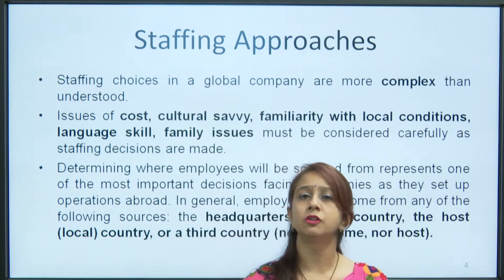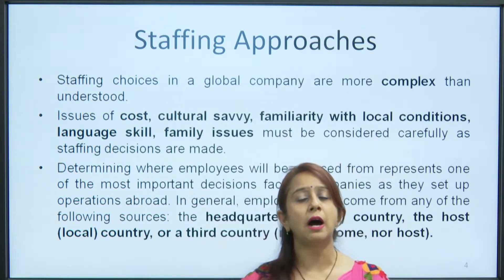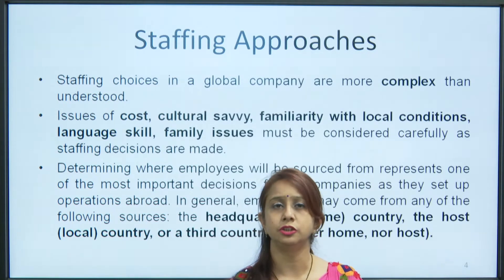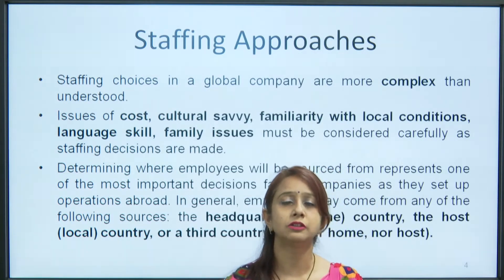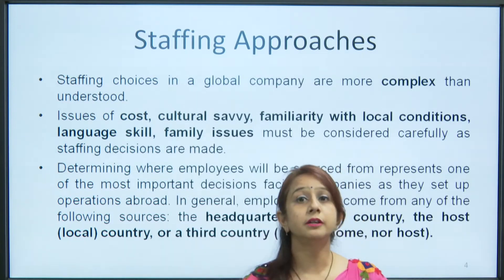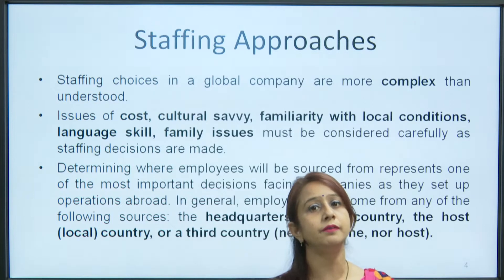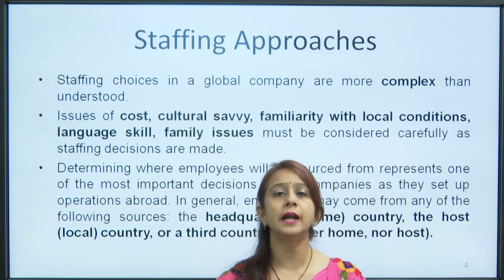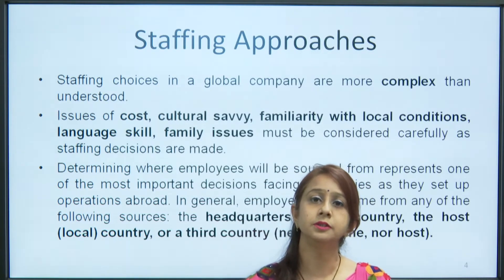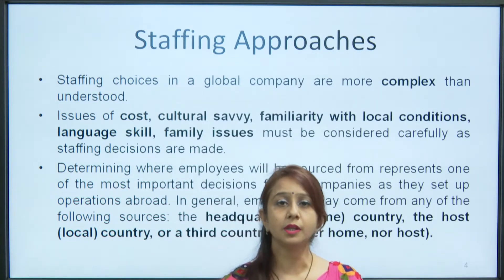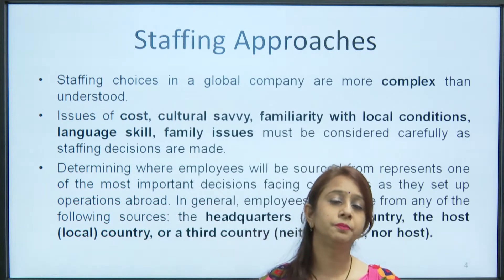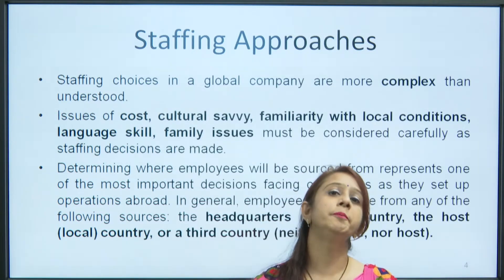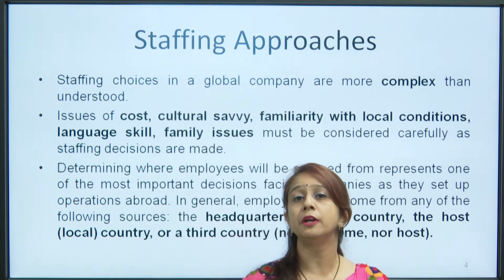When we move outside national boundaries into the overseas market, certain staffing approaches can be adapted. In the international market, we have three kinds of people: parent country nationals (PCN), host country nationals (HCN), and third country nationals (TCN). Parent country nationals are citizens of the parent country; host country nationals are citizens of the country where the subsidiary is located; and third country nationals are neither from the parent nor the host country. With these three types of people available, different staffing approaches are needed compared to the domestic market.